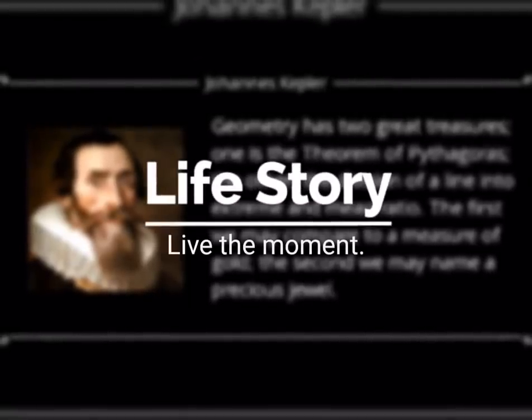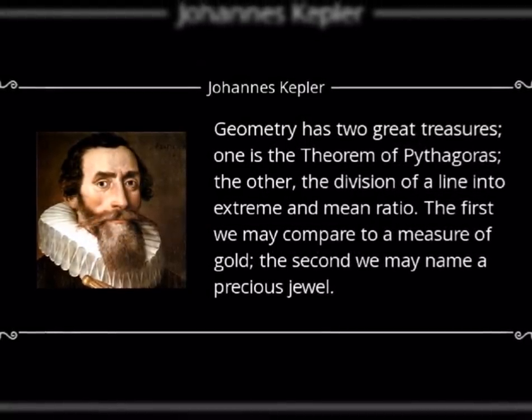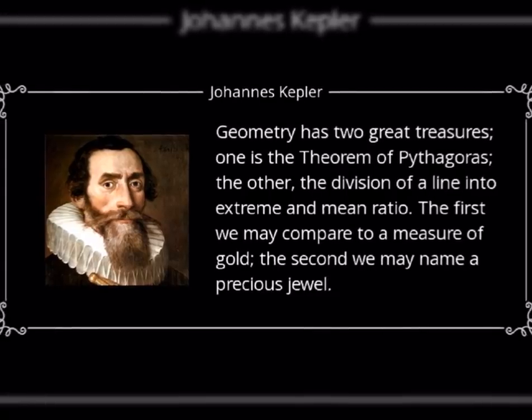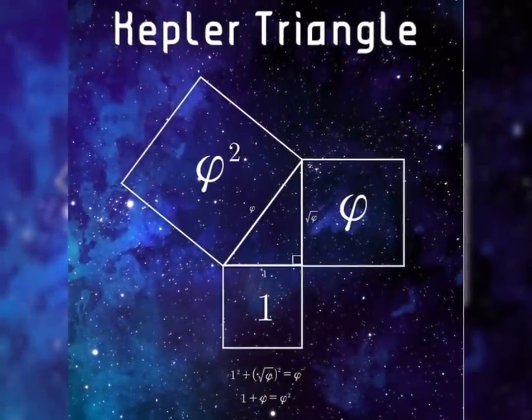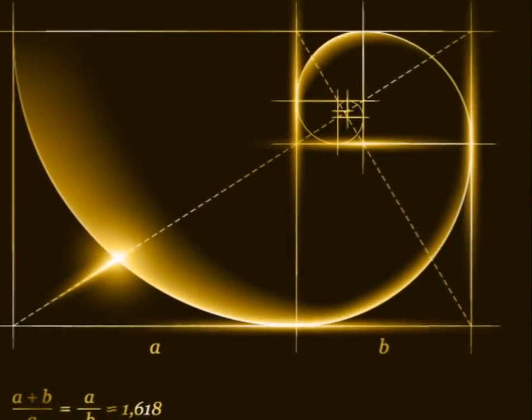One of the greatest geometers of all times, Johannes Kepler, had mentioned the two great treasures of geometry: first, the theorem of Pythagoras, and second, the Golden Ratio.